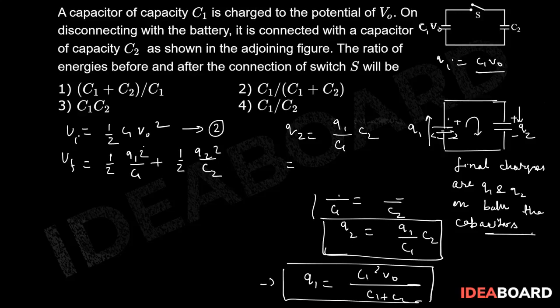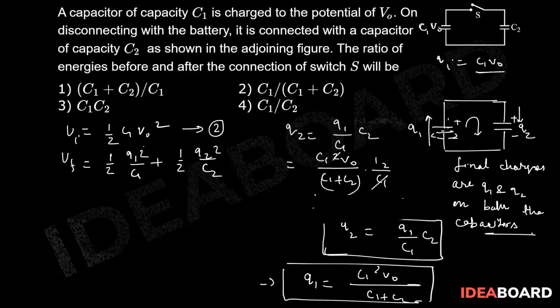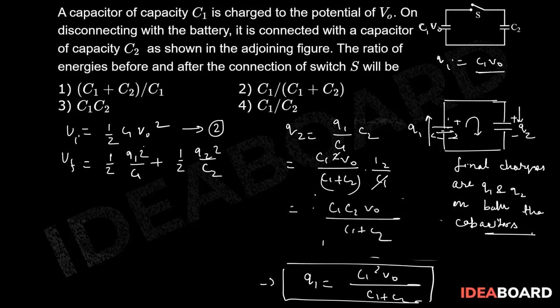Substituting Q1 = C1²·V0/(C1 + C2) into Q2 = (Q1·C2)/C1, the C1 terms cancel and we get Q2 = C1·C2·V0/(C1 + C2). Now putting these values in: Q1² = C1⁴·V0²/(C1 + C2)² and Q2² involves C1²·C2²·V0²/(C1 + C2)².